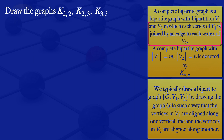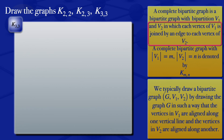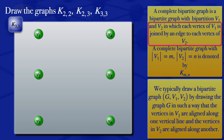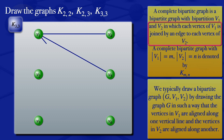I'll now draw the complete bipartite graph K3,3. For K3,3, the first subset has three vertices: V1, V2, and V3. Then I draw three vertices for the second subset: V4, V5, and V6. Looking at vertex V1, I join it by an edge to each of the three vertices in the second subset: V1 and V4, V1 and V5, V1 and V6.